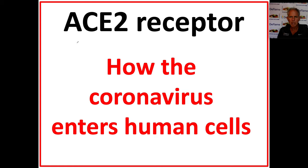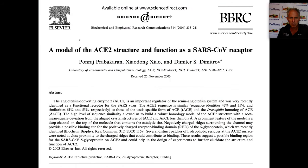In this video, I'm going to talk about the ACE2 receptor, which is how the coronavirus enters human cells — or at least that's how it is described. There are a handful of videos online and some articles that have discussed this, and there is some confusion with this language. So I'm going to show you images as to how this works.